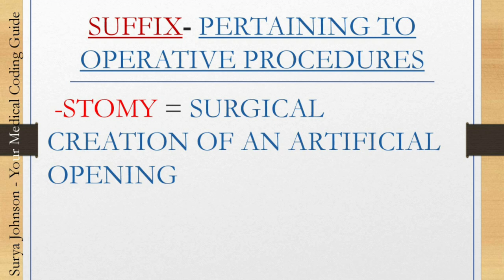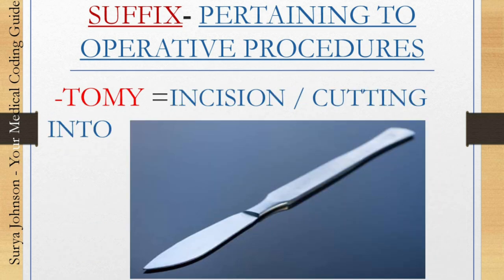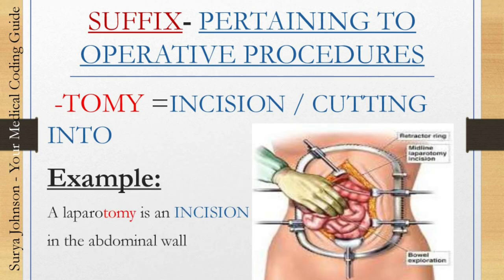The next one, '-stomy,' means surgical creation of an artificial opening. For example, a colostomy is an artificial opening into the colon. The next one is '-tomy' — notice that '-stomy' and '-tomy' differ by just one letter, but they totally differentiate the procedure. We should carefully read all these words to identify the exact procedure performed. '-Tomy' means incision or cutting into. For example, a laparotomy is an incision in the abdominal wall.